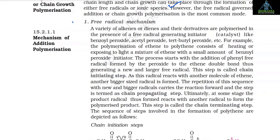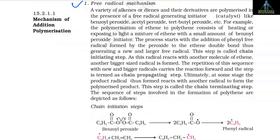1. Free Radical Mechanism: A variety of alkenes or dienes and their derivatives are polymerized in the presence of a free radical generating initiator (catalyst) like benzoyl peroxide, acetyl peroxide, or tert-butyl peroxide.